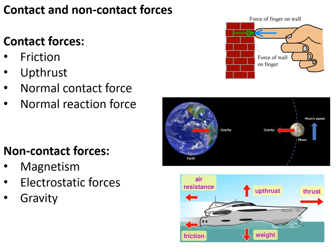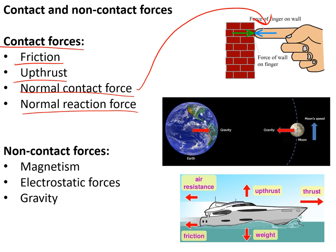Contact forces are forces where two objects need to be in direct contact for the force to happen — friction and upthrust are two examples, and then we have normal contact force and normal reaction force. Normal contact force is the force you push on something with, and normal reaction force is the force from Newton's third law pushing back on you. Non-contact forces include magnetism, electrostatic forces and gravity, where you do not need direct contact.